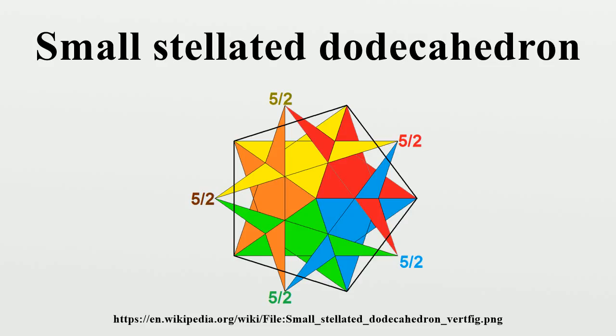Related polyhedra: Its convex hull is the regular convex icosahedron. It also shares its edges with the great icosahedron. This polyhedron is the truncation of the great dodecahedron.